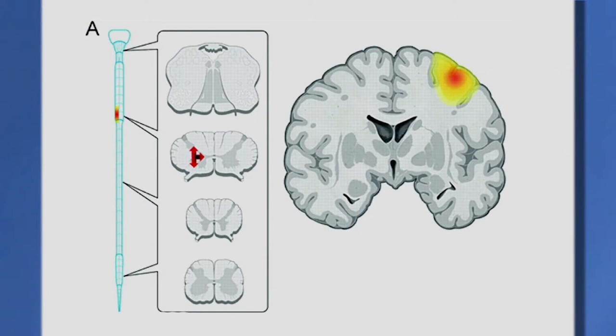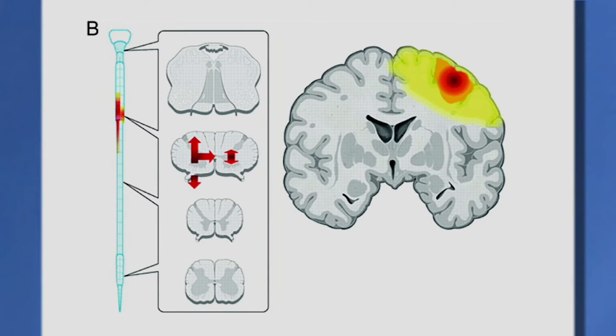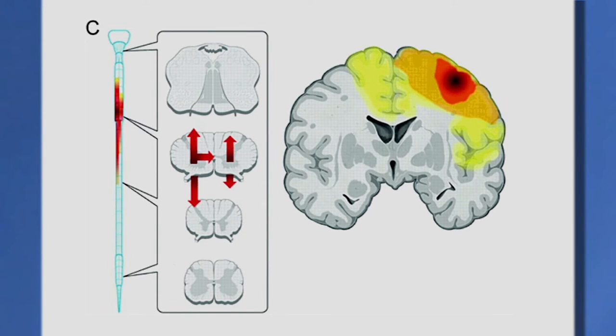Those two systems — the upper one that goes from the brain to the spinal cord is called the upper motor neuron, and the one that leaves the spinal cord and goes to the muscle is the lower motor neuron. In ALS, both of those systems start to break down. It could begin with the upper or with the lower, or sometimes with a mixture of each.